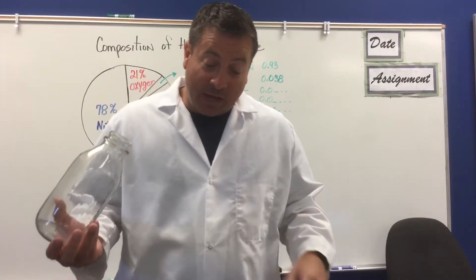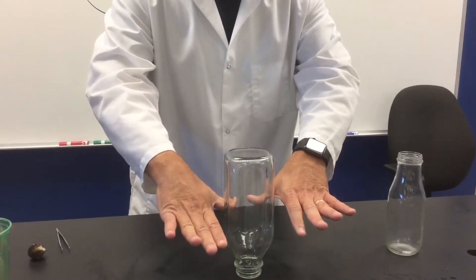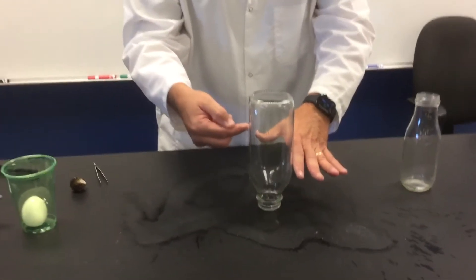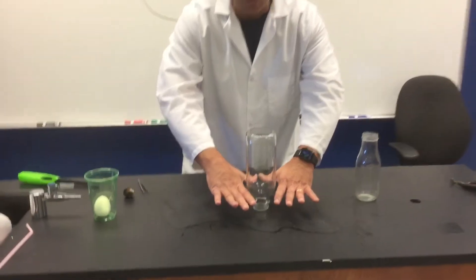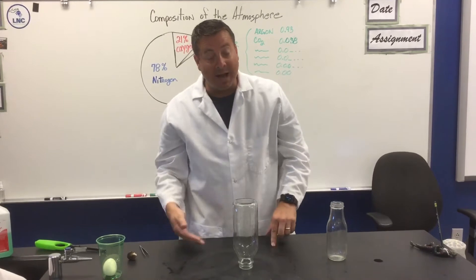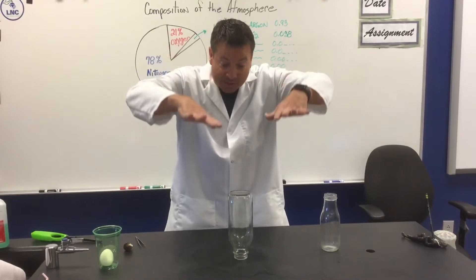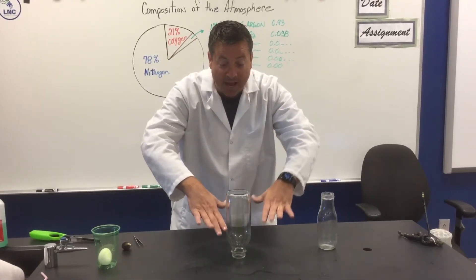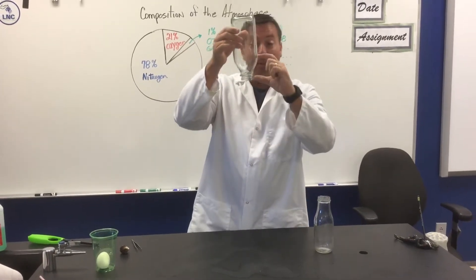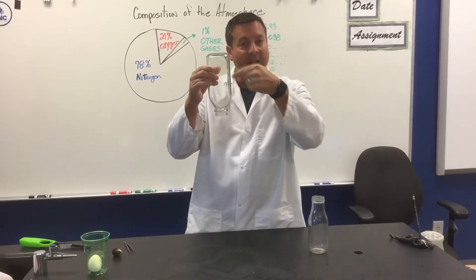Then we took a different candle, lit it, and put it over a tray filled with water. The candle used up the 21% of oxygen inside, and the atmosphere was trying to get in to balance the inside with the outside. What was in the way? That layer of water. So the atmosphere pressed down on that water and the water filled up the jar to about 21% of the void created by the candle eating away the oxygen.